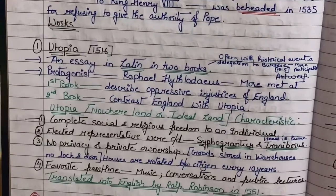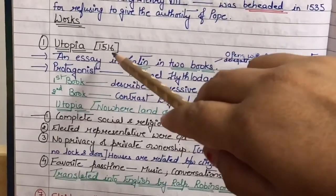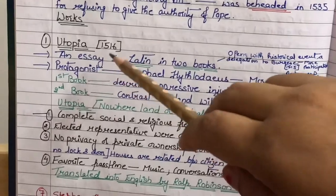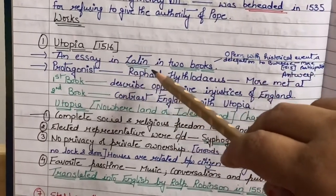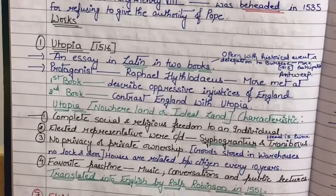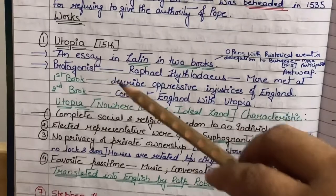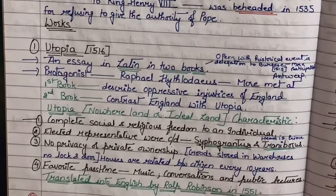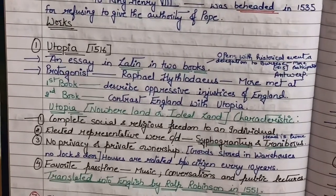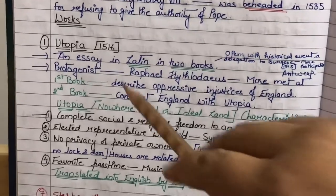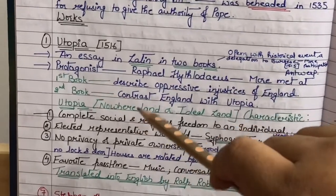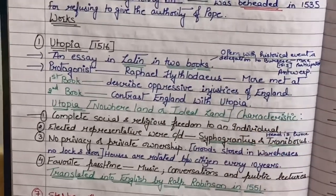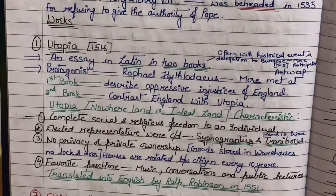When we talk about Thomas Murray, his most important work is Utopia, published in the year 1516. Utopia was written in the Latin language and in two books. The first book describes the injustice and oppressive situations in England. The second book shows the contrast between England and Utopia.